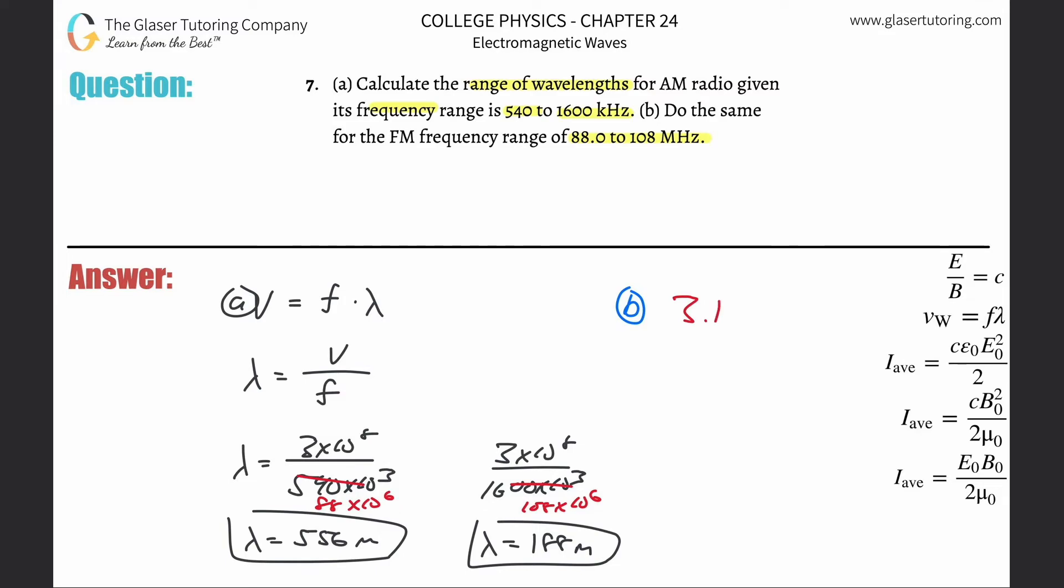And then for the second one, three times 10 to the eight divided by 108 times 10 to the sixth. That's going to be about 2.78 meters.